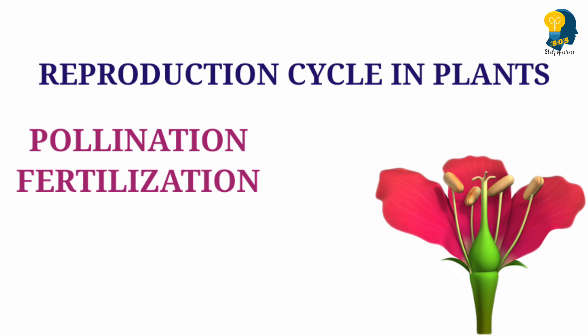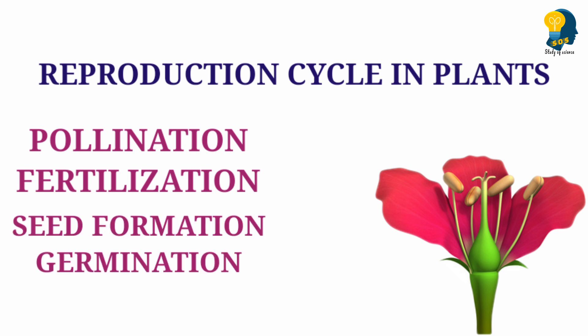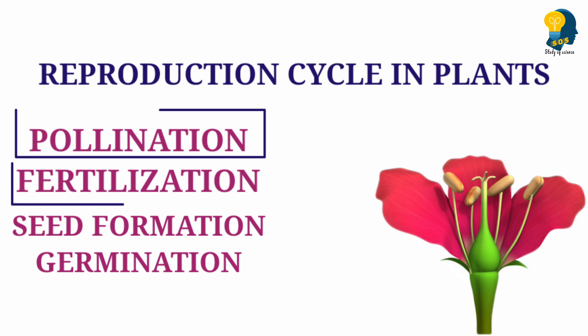Now let us understand the different steps which take place during the reproduction cycle. The first step is pollination, the second step is fertilization, the third step will be seed formation, and the fourth step is germination. These are the four steps involved in the reproduction cycle in a plant.